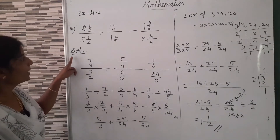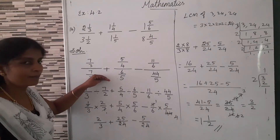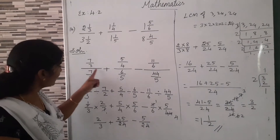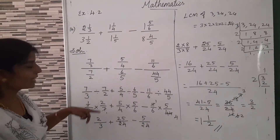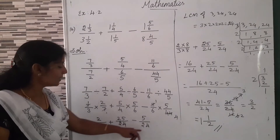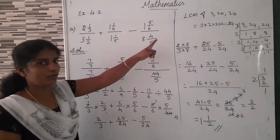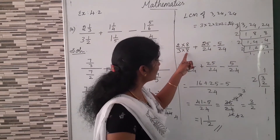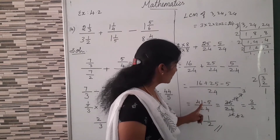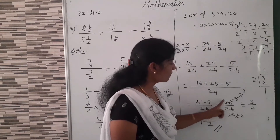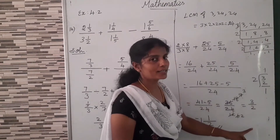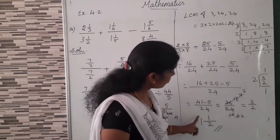Once again, we write the mixed fractions as improper fractions. This is a complex fraction — we convert it into division fraction form. We write the reciprocal of the second fraction and simplify it to get the same terms. Then we add and separate. We need the same denominator, so we take the LCM of 3, 24, and 24, which is 24. Multiplying by 8 gives us 24. Then taking the common denominator: 16 plus 25 equals 41, minus 5 equals 36. So 36/24, simplified using 2 and 3 tables, gives 3/2. Convert to mixed fraction: 1 and 1/2 is the answer.